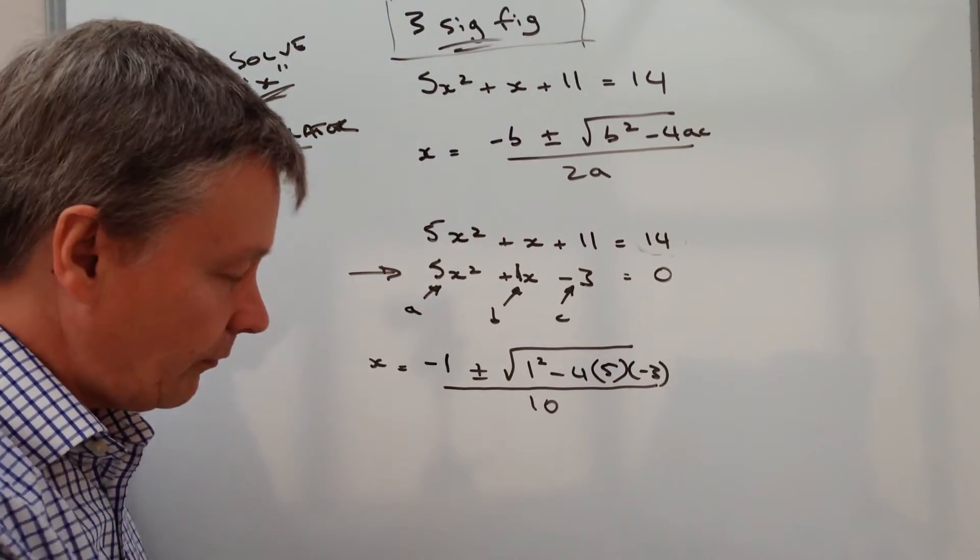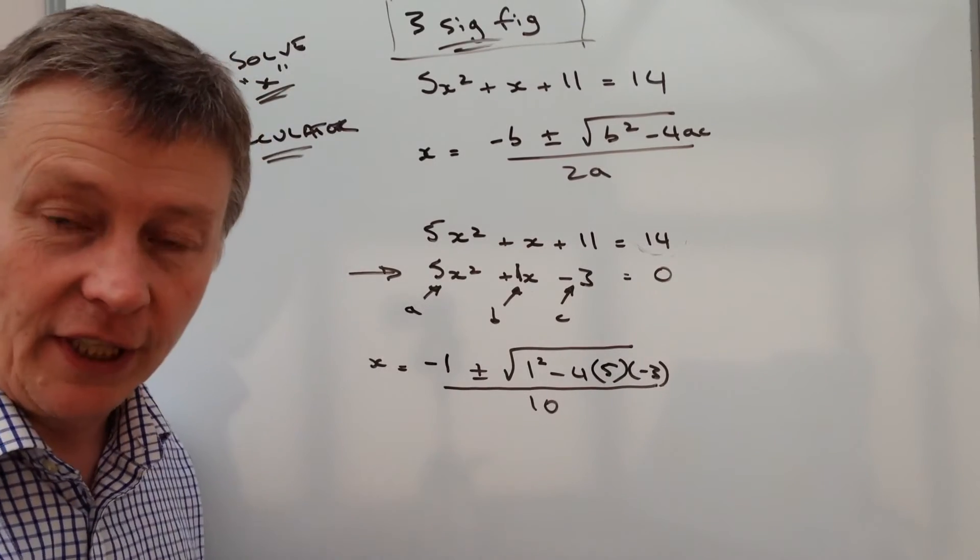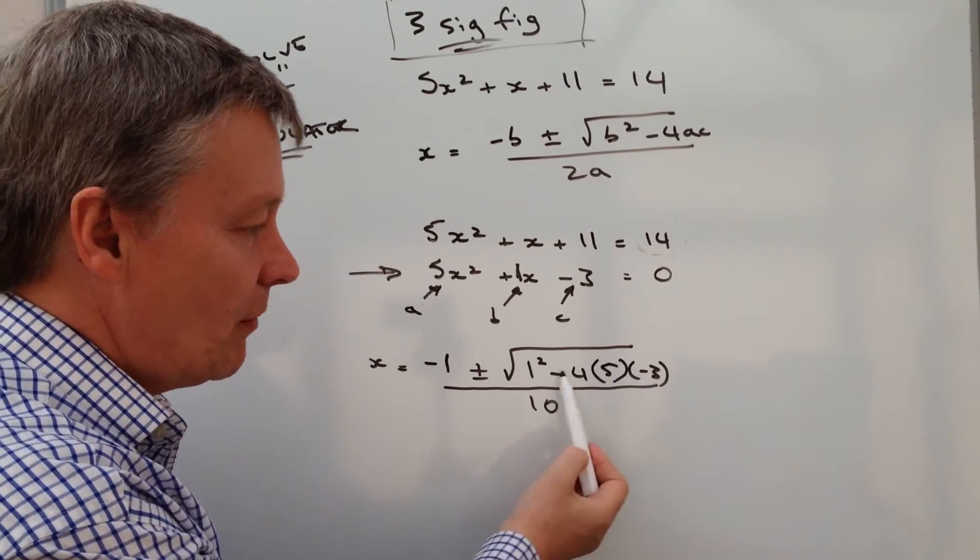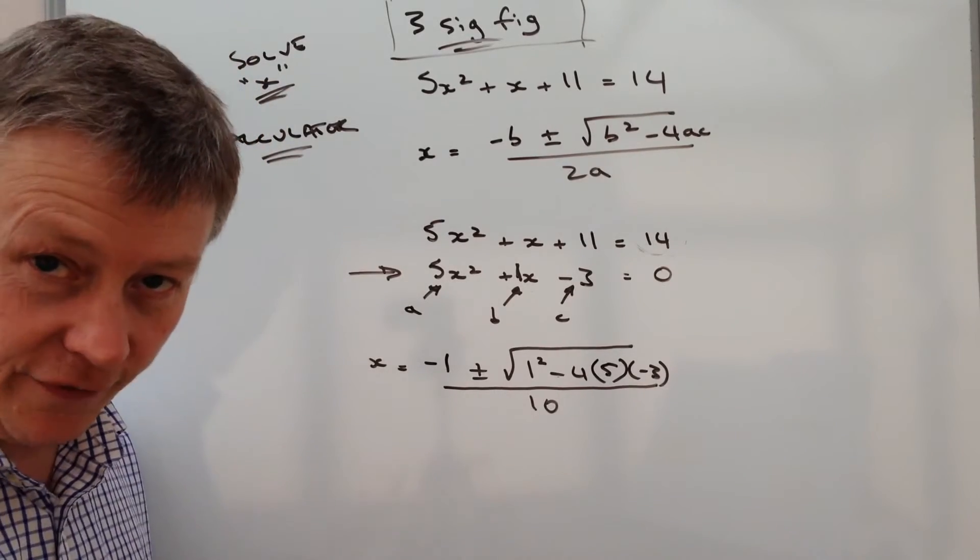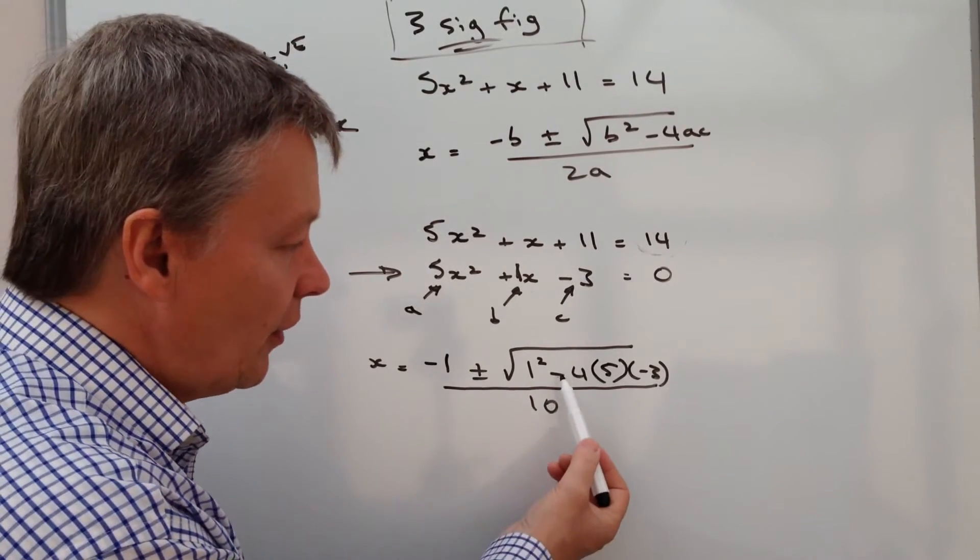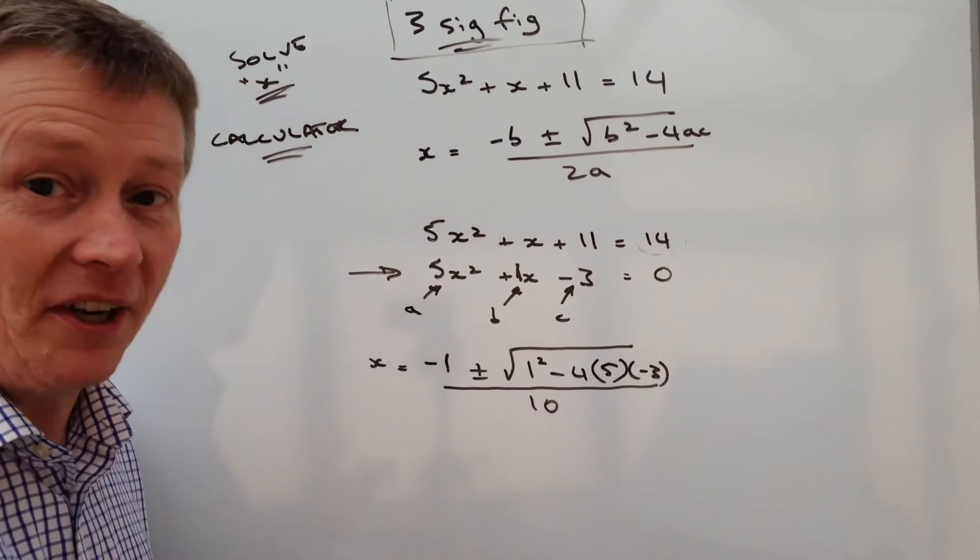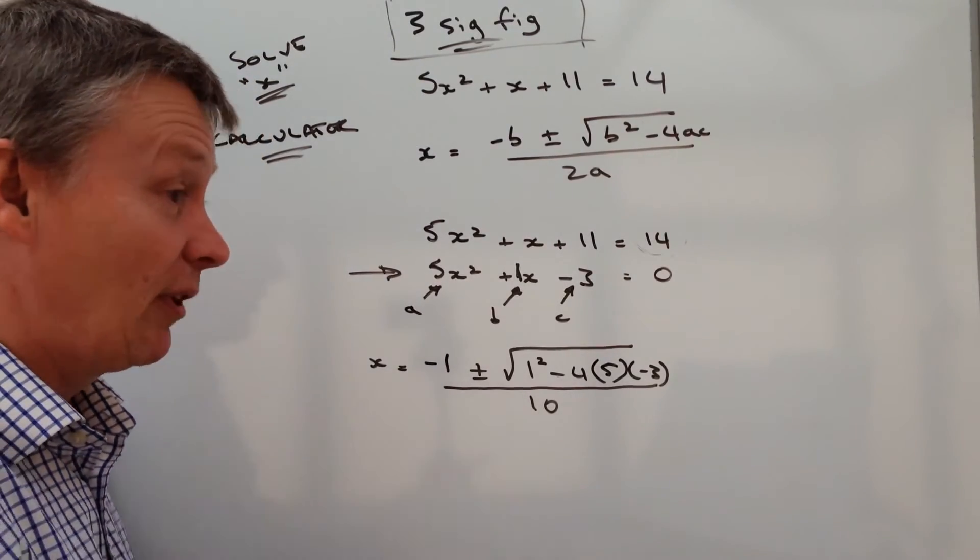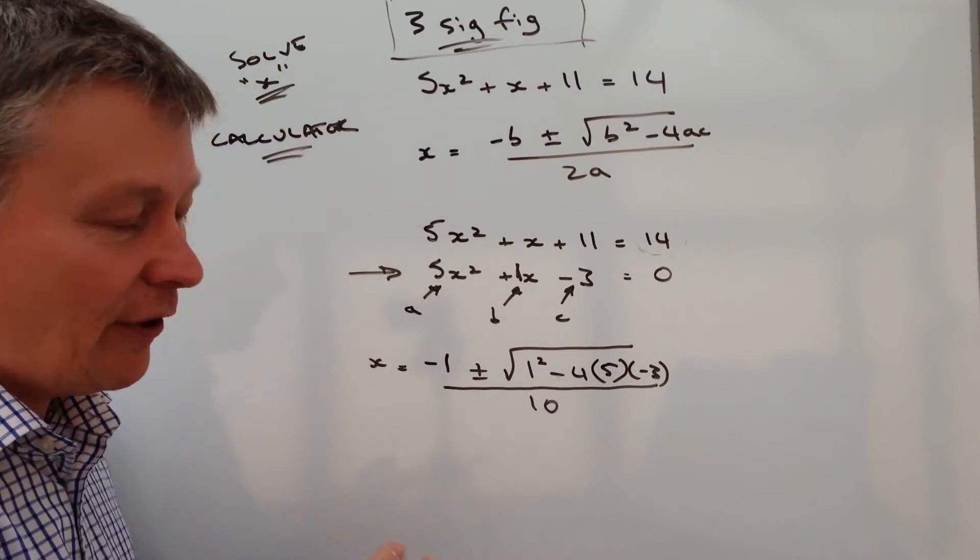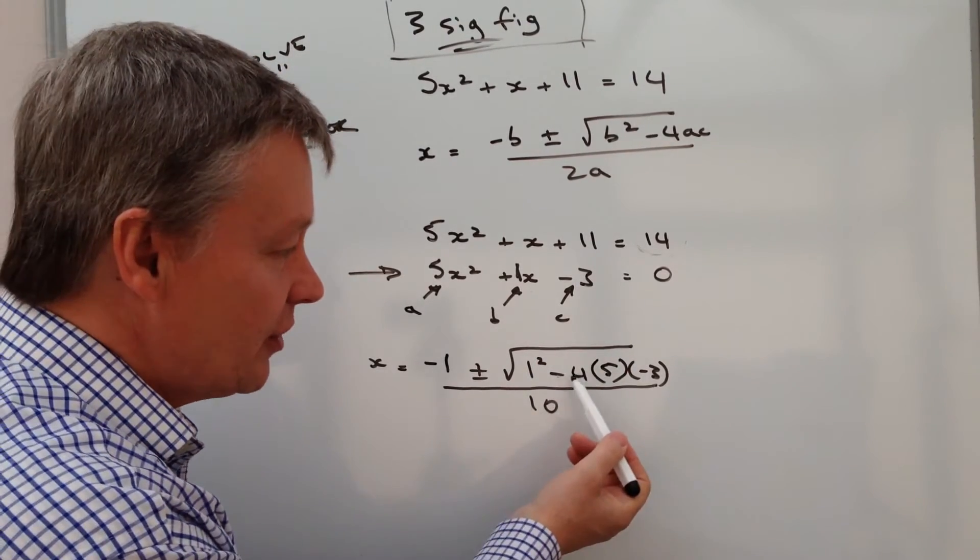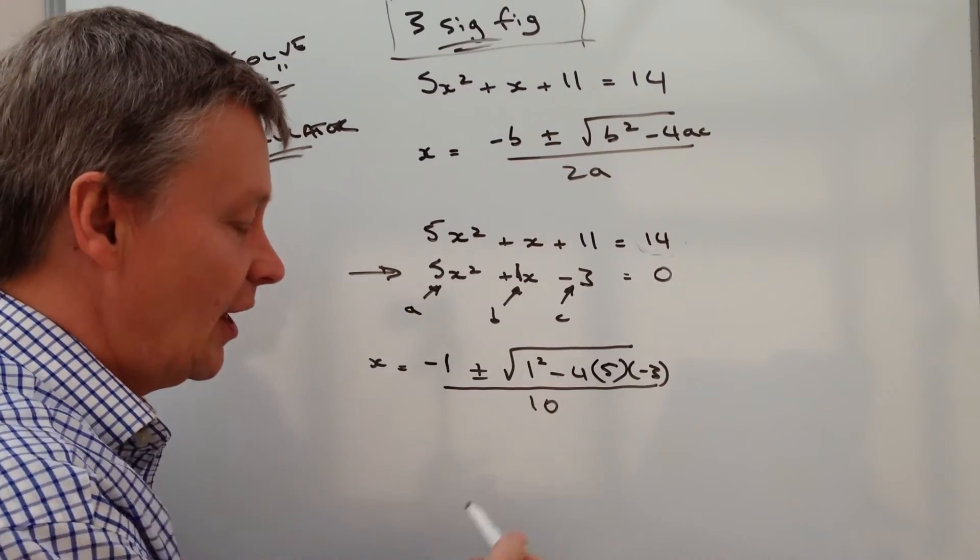The tricky bit is going to be this, because effectively you've got a minus times a minus. So you've got 5 times minus 3 is minus 15, and then minus 4 times minus 15, which is plus 60. Follow that through on the calculator and just be very careful to make sure that you do this little bit first.